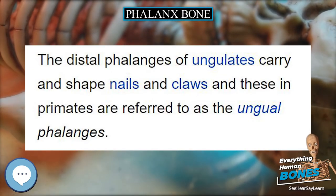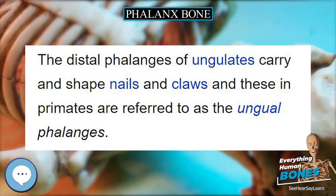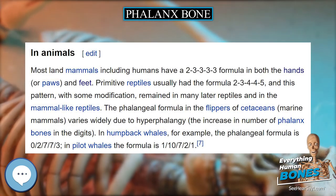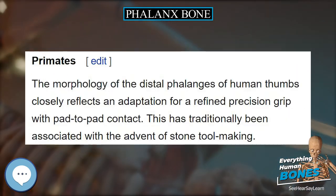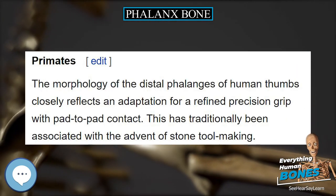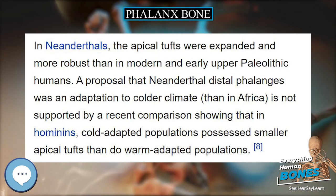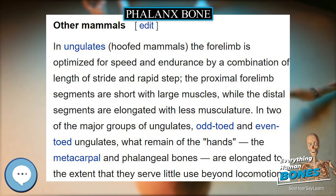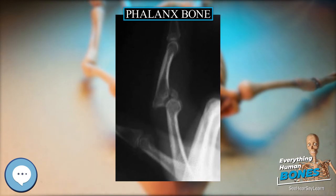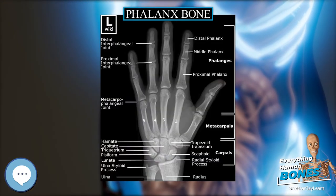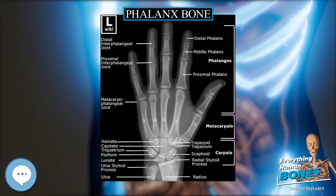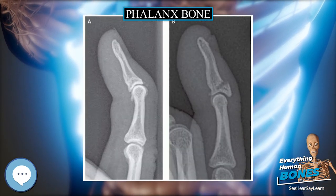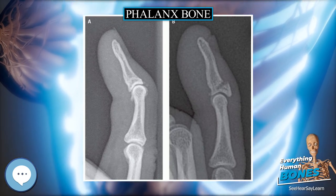Primates. The morphology of the distal phalanges of human thumbs closely reflects an adaptation for a refined precision grip with pad-to-pad contact, traditionally associated with the advent of stone tool-making. However, the intrinsic hand proportions of australopiths and the resemblance between human hands and the short hands of Miocene apes suggest that human hand proportions are largely plesiomorphic, as found in ancestral species, in contrast to the derived elongated hand pattern of other extant hominoids. In Neanderthals, the apical tufts were expanded and more robust than in modern and early Upper Paleolithic humans, though a proposal that this was an adaptation to colder climate is not supported by recent comparisons.